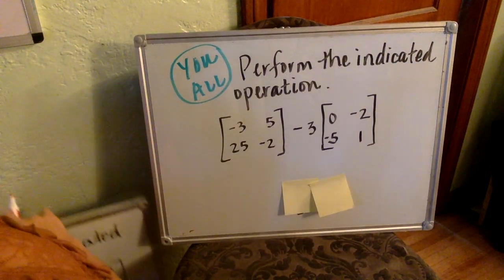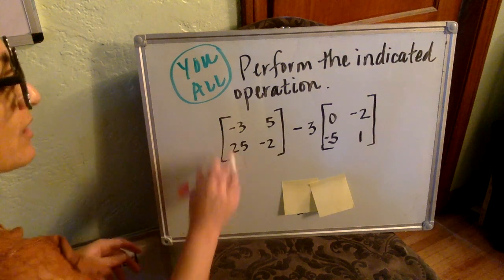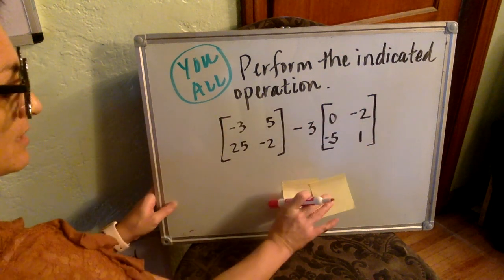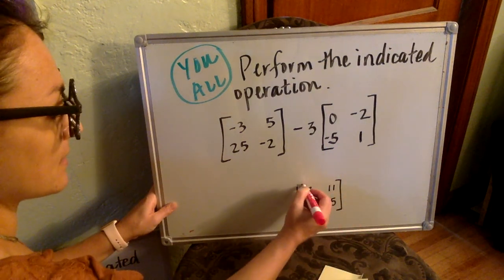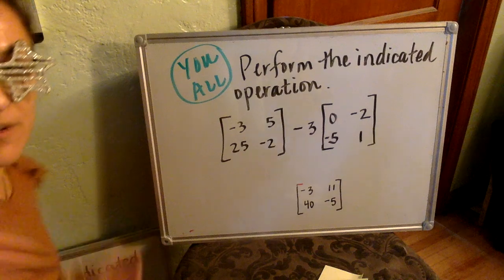All right, so let's take a look at this last one. Why don't you see if you can give it a try? This is a two by two, another two by two. And I think if you've done this one correctly, I think you should have got this. All right, so give it a try.